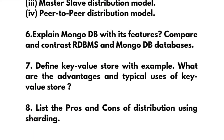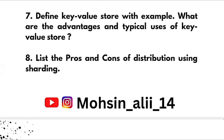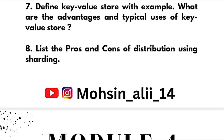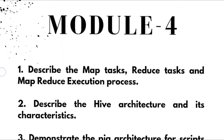The last three questions from Module 3 are: explain MongoDB with its features and compare and contrast RDBMS and MongoDB databases. Next, define key-value store with an example, explain the advantages and typical uses of key-value store, and list the pros and cons of distribution using sharding. That covers Module 3.